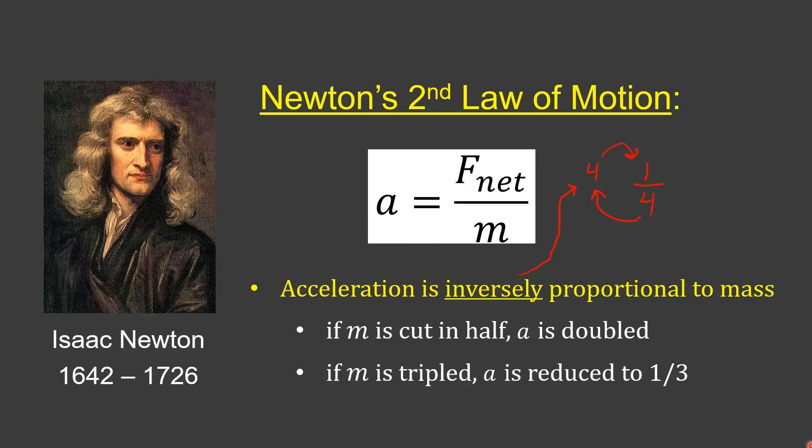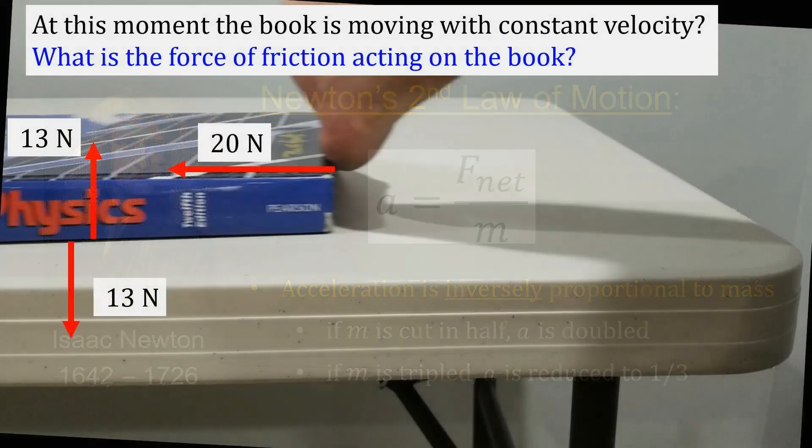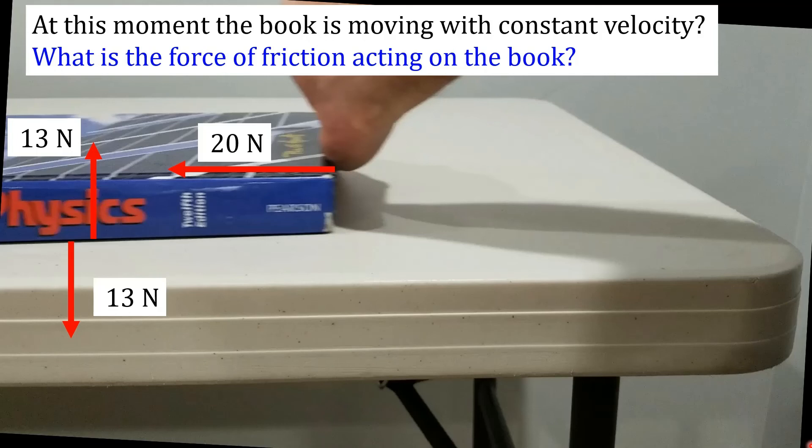Let's put this all together with one last example. Remember the video, the amazing video that I showed you of the book sliding to the left. Let's say that during that motion, at this moment, the book was moving with constant velocity. And I want to ask the question: what is the force of friction acting on the book? Obviously there's friction - I mean, we just know from everyday experience that it's very hard to get rid of friction. So how would we determine what that force of friction would be?